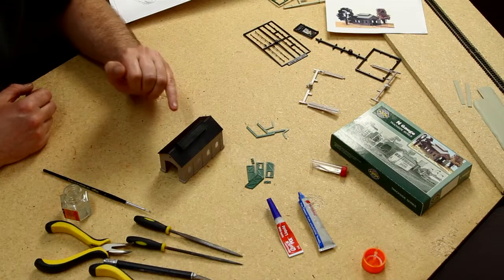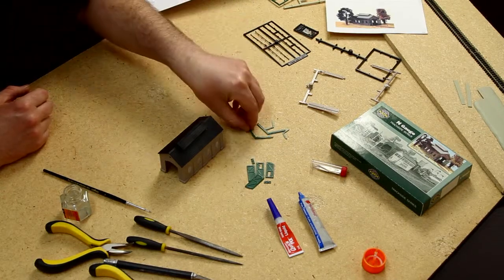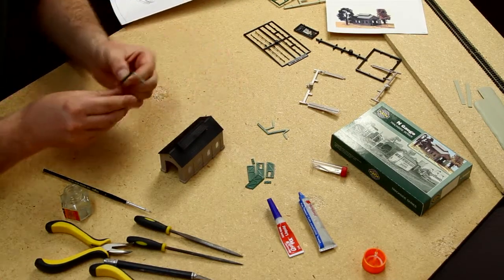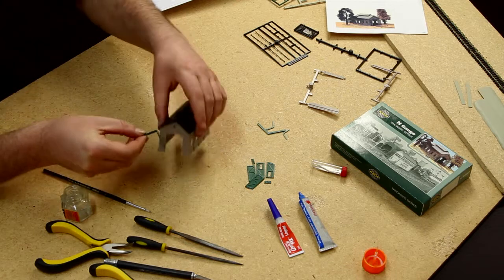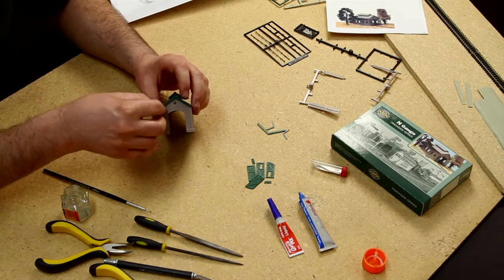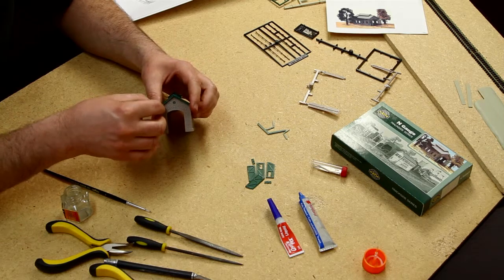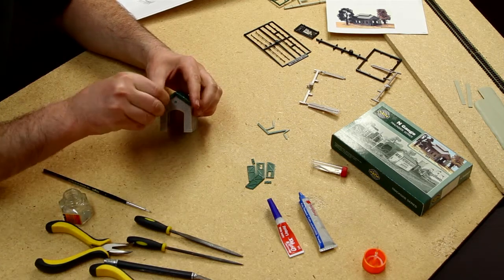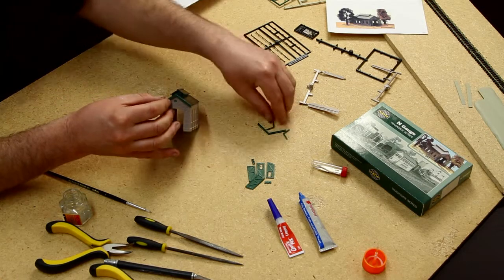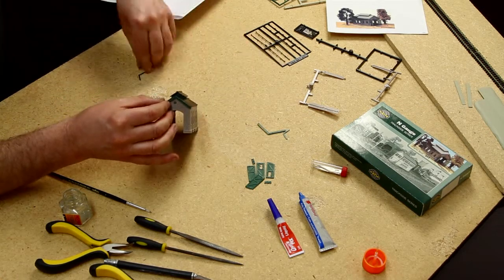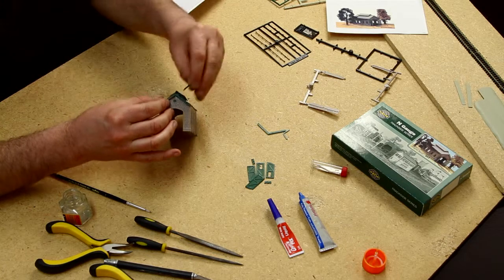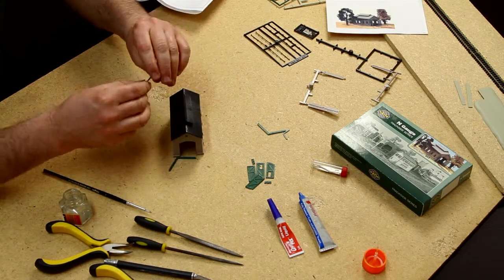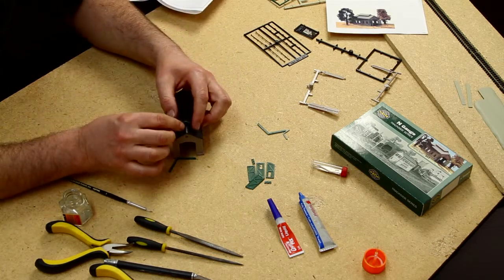Now that you have your ridge capping on, you can put on your eave covers. There's two large and two small. The large one goes on there and the smaller one goes on the top.